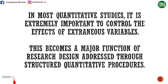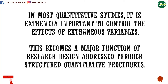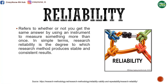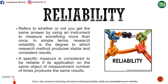In most quantitative studies, it is extremely important to control the effects of extraneous variables. This becomes a major function of research design, assessed through structured quantitative procedures. Now, let's proceed to reliability. It refers to whether or not you get the same answer by using an instrument to measure something more than once. In simple terms, research reliability is the degree to which a research method produces stable and consistent results. A specific measure is considered reliable if its application on the same object of measurement a number of times produces the same results.